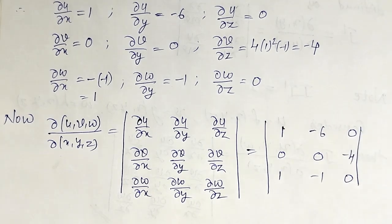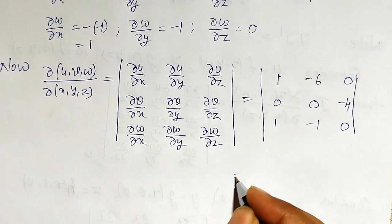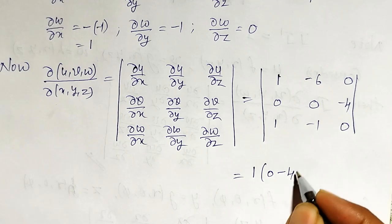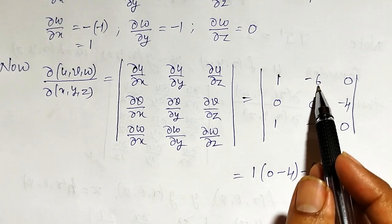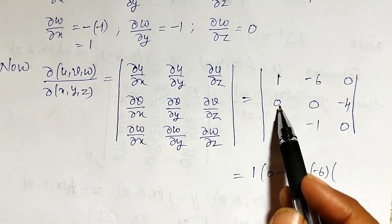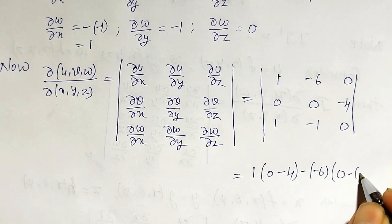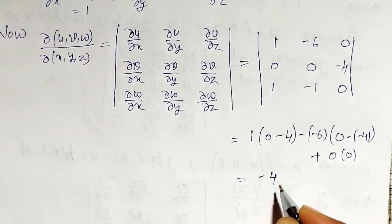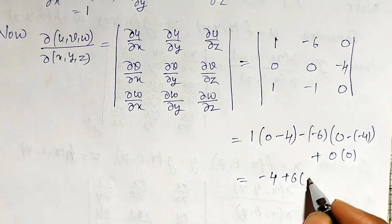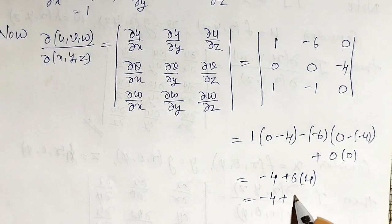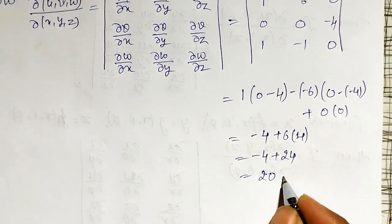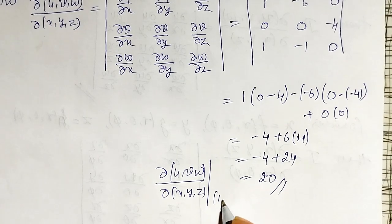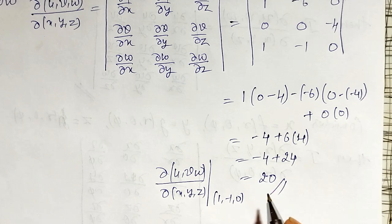Expanding this determinant: 1 times (0·0 - (-4)·(-1)) minus (-6) times (0·0 - (-4)·1) plus 0 times anything. This gives 1 times (0 - 4) minus (-6) times (0 - (-4)) = 1·(-4) - (-6)·(4) = -4 + 24 = 20. Therefore the Jacobian of u, v, w with respect to x, y, z at the point (1, -1, 0) is equal to 20.